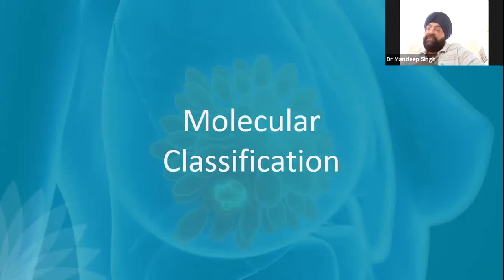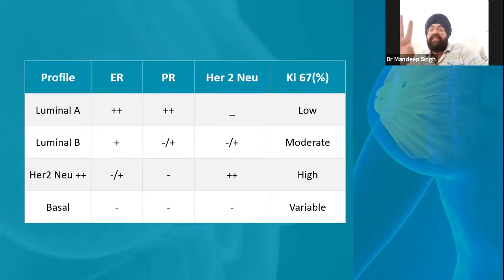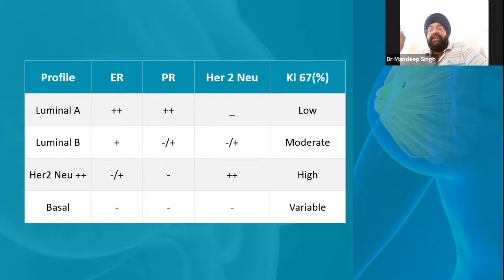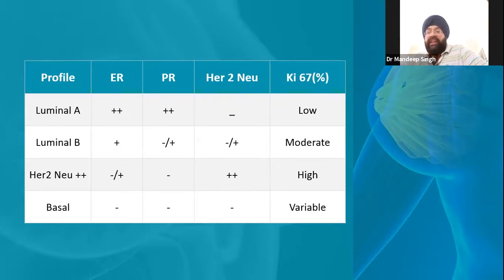When we do the IHC marking, we are looking for the molecular signature of the cancer. The four basic signatures or tests we order are: ER — estrogen receptor; PR — progesterone receptor; HER2 — a tyrosine kinase gene marker which, when active, indicates the cancer is slightly more aggressive; and KI-67, which gives us the indication of out of 100 cells, how many cells are actually dividing, expressed as a percentage.